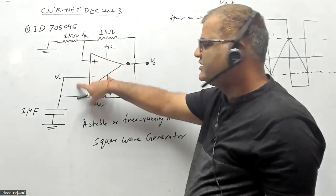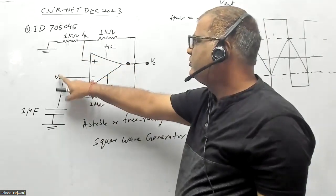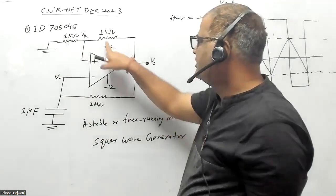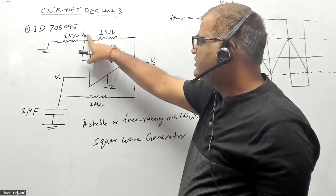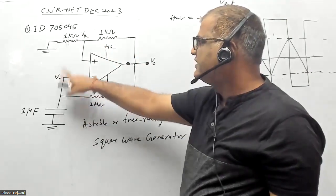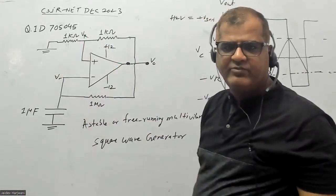We compare the voltage at these two terminals. Whenever this voltage goes lower than this voltage, because now this voltage becomes negative since this is minus 12 volts, by voltage divider here it's negative, and this is also charging in the negative side. Whenever this voltage is less than this voltage, the difference will become again positive.